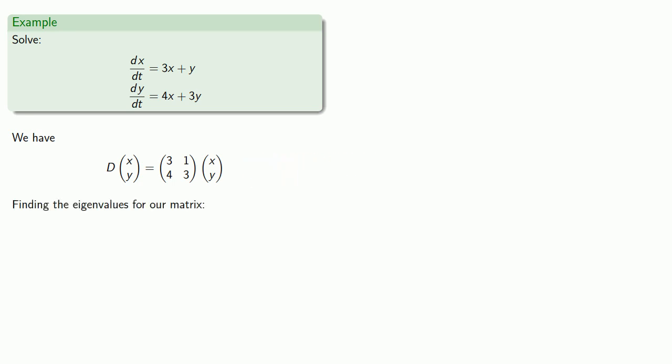We'll find the eigenvalues for our matrix. Well, actually, we've already done that. We found the eigenvalue lambda equals 5 has eigenvector 1, 2, and the eigenvalue lambda equals 1 has eigenvector 1, negative 2.